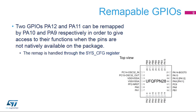The two pins PA9 and PA10 can remap the two GPIOs PA11 and PA12 respectively, in order to give access to their functions when the pins are not natively available on the package. With the remapping, alternate functions related to pins PA9 and PA10 are available. Note that this remapping also applies when the package supports pins PA9 and PA10 as independent pins.